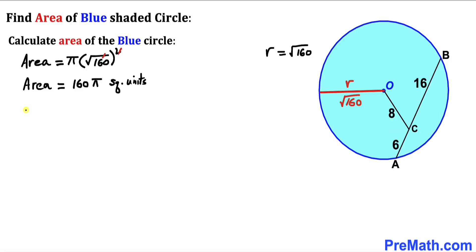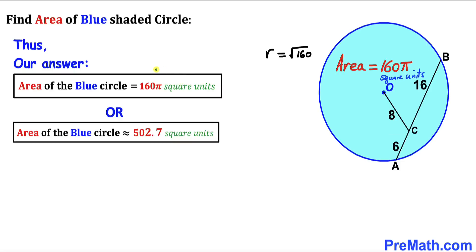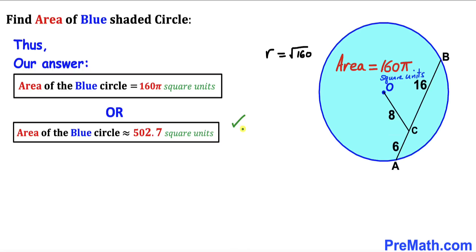We can also write this area in decimal, which is approximately 502.7 square units. So after all these steps using the intersecting chords theorem, the area of this blue shaded circle is 160π square units, or approximately 502.7 square units. That's our final answer. Thanks for watching and please don't forget to subscribe to my channel for more exciting videos.